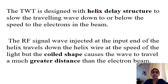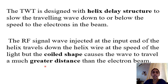The helix delay structure reduces the velocity of the RF wave so that the RF waves and electrons interact maximally. It slows the traveling wave down to or below the speed of the electrons. Normally the RF signal propagates with the velocity of light, but the helical coiled shape forces it to travel a greater distance than the electron beam, ensuring interaction over the whole length of the tube and producing a more amplified output.